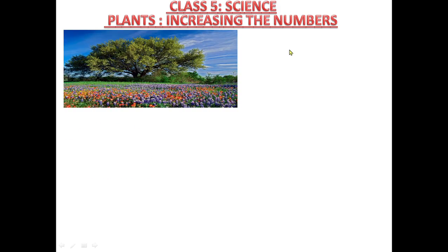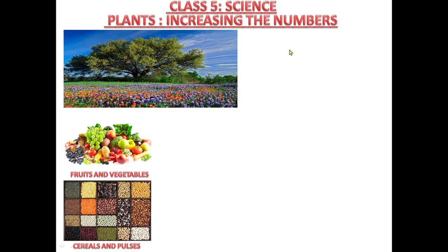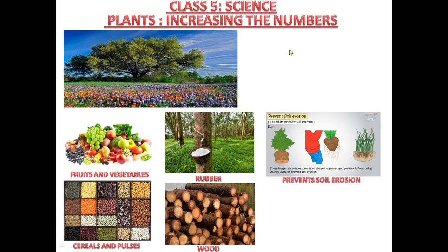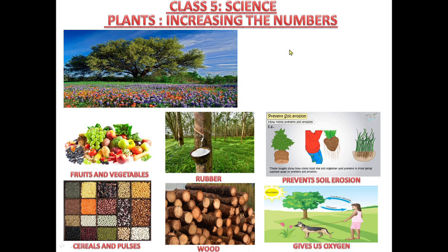Hello students, today we will learn Class 5 Science Chapter: Plants Increasing the Numbers. As you all know, plants give us fruits and vegetables, cereals and pulses, rubber, wood to make furniture and paper. Plants also help to reduce soil erosion by holding tightly the fertile soil with their roots. They also supply us with oxygen, so life on earth cannot exist without plants. That's why we need to grow more plants.